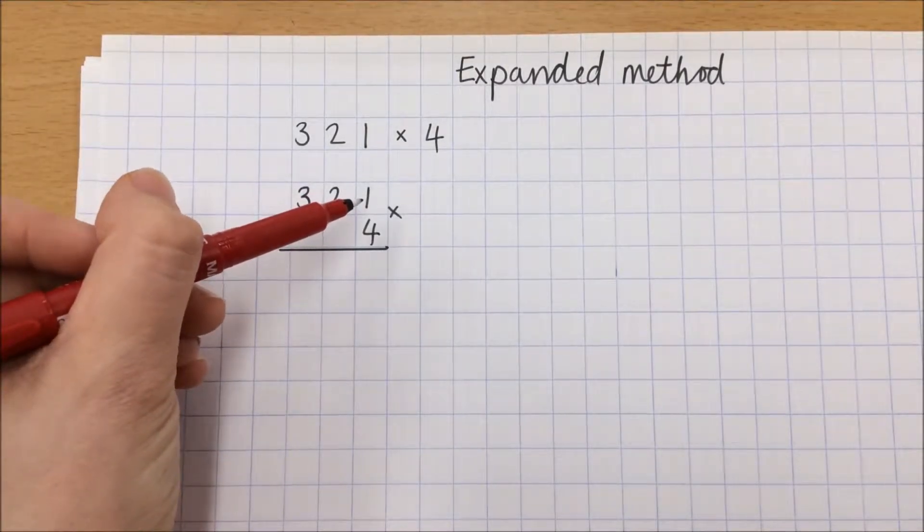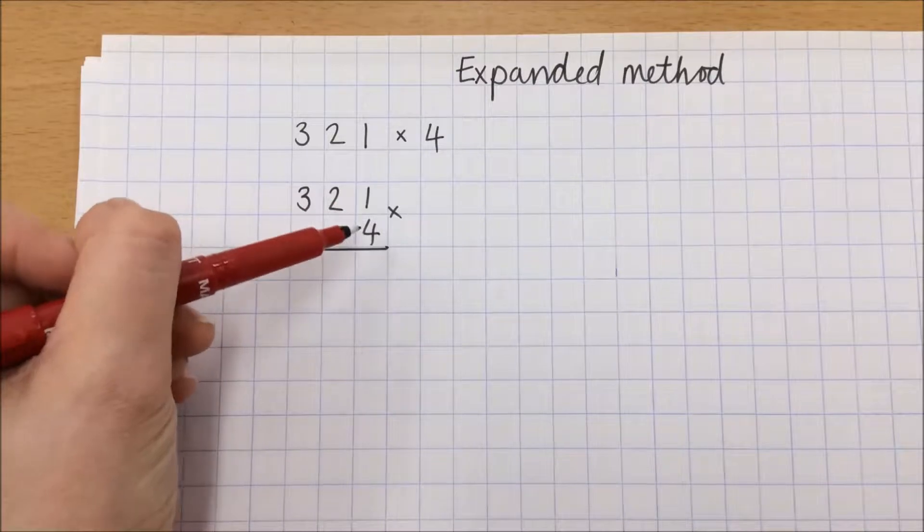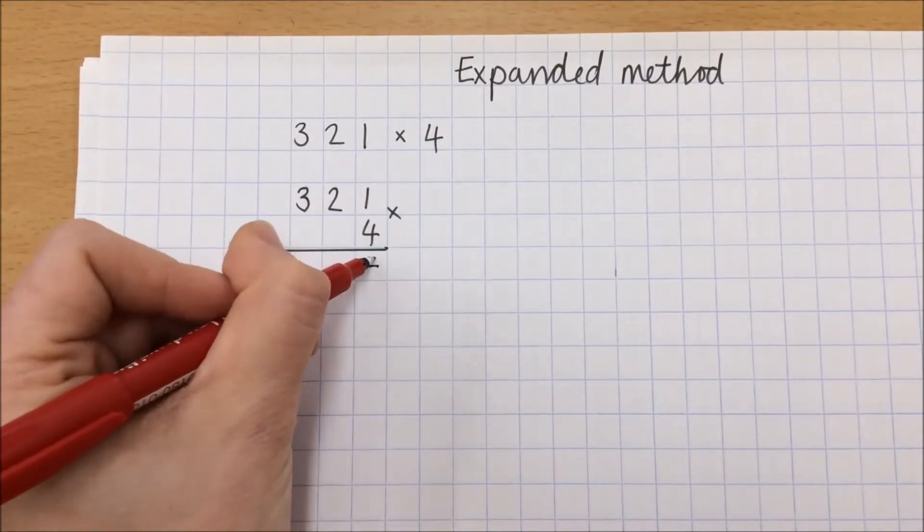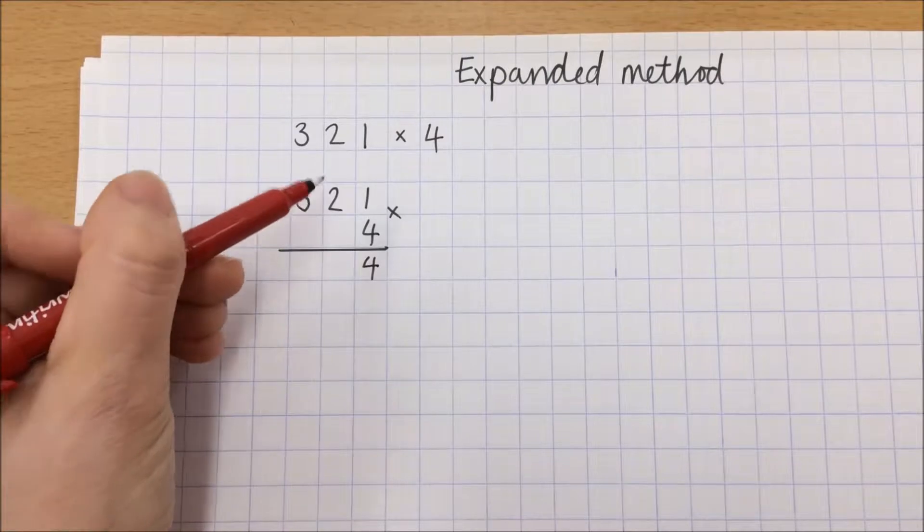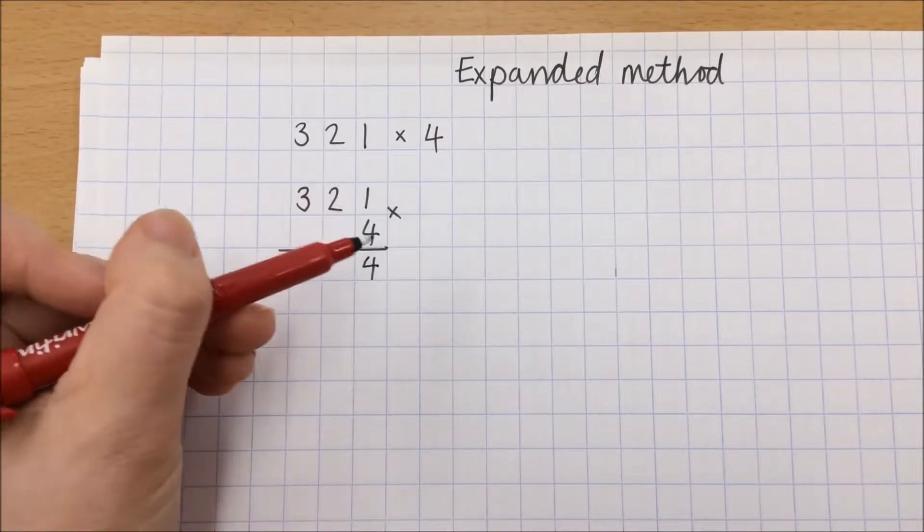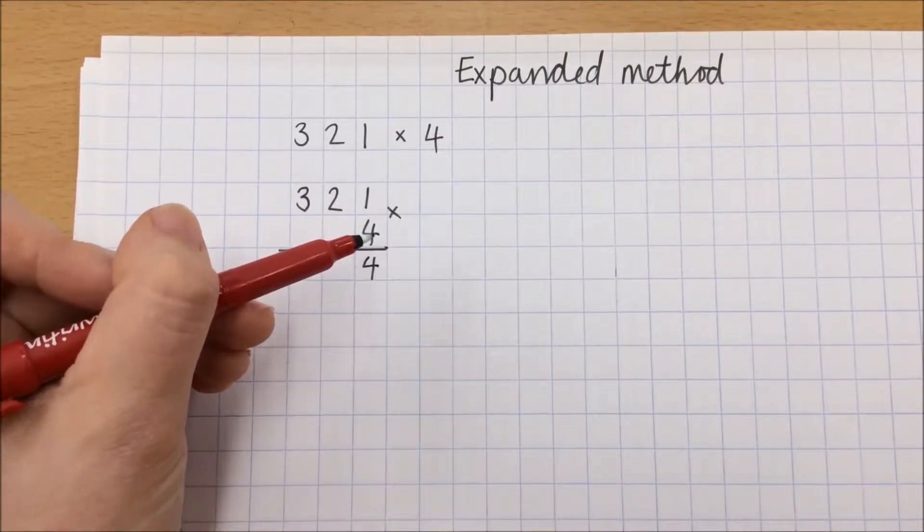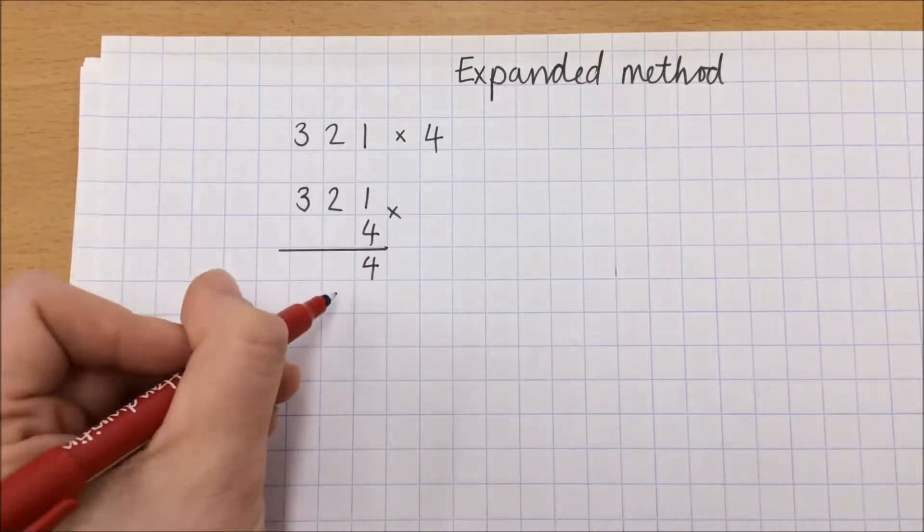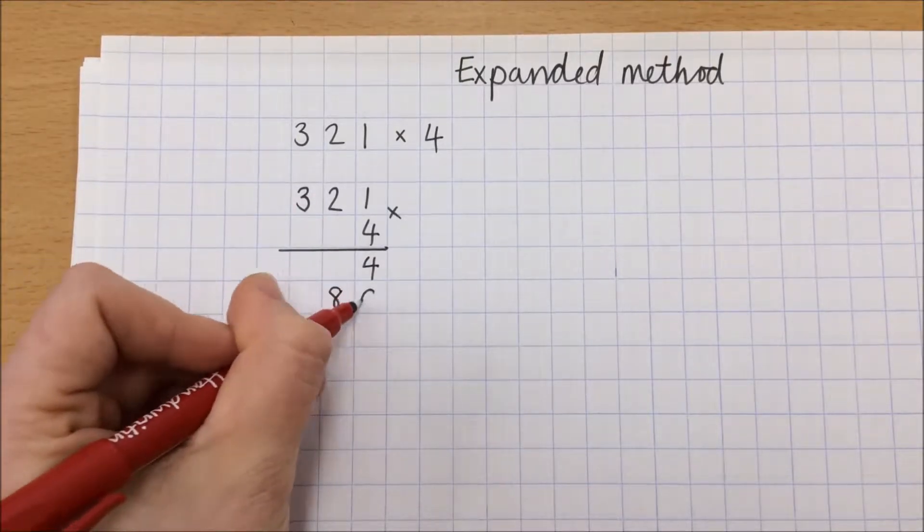So I look at my calculation this way now. 1 multiplied by 4 is 4. I'm then looking at my tens. 2 tens multiplied by 4 is 8 tens, or 80. So I put my answer underneath.